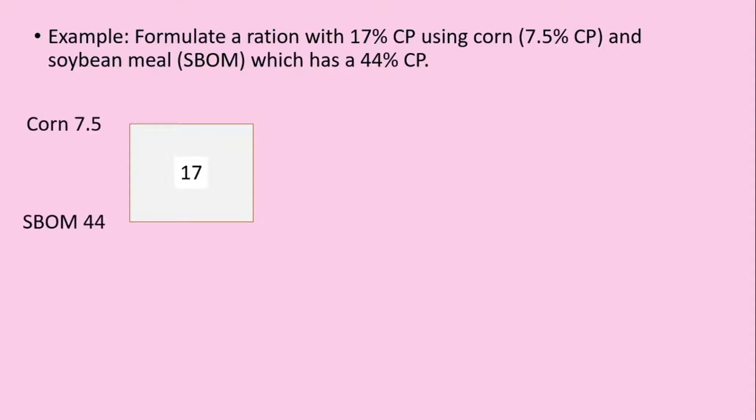Put corn along with its CP content in the upper left corner of the square and soybean meal on the lower left portion. Subtract the CP content of corn from the desired protein level and place the difference diagonally opposite that of corn. So 17 minus 7.5, you'll get 9.5. Do the same with soybean oil meal: 44 minus 17, you will get 27 parts.